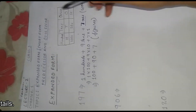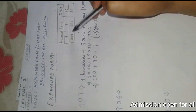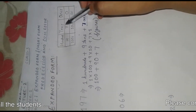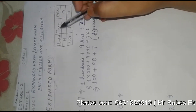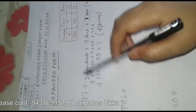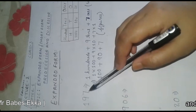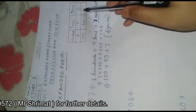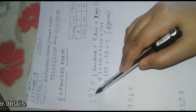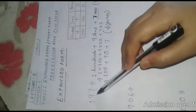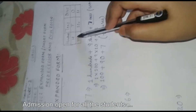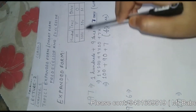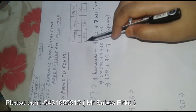You can see here that I have drawn a place value chart which we have already read in the previous video, but let us revise it once more. While writing the digits in the place value chart, we always write the digits from right to left. The first digit is 7, so it comes in the ones place; the second digit is 9, it comes in the tens place; the third digit is 1, it comes in the hundreds place.